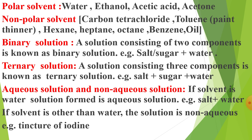The non-polar solvent — the common example is carbon tetrachloride (CCl₄). In CCl₄, the individual bond is polar, but as a molecule it is non-polar because the dipole moment value is zero. Toluene, used in paint thinner, hexane, heptane, octane, benzene, and oil — these are examples of non-polar solvents.